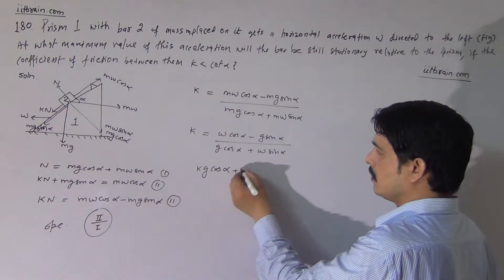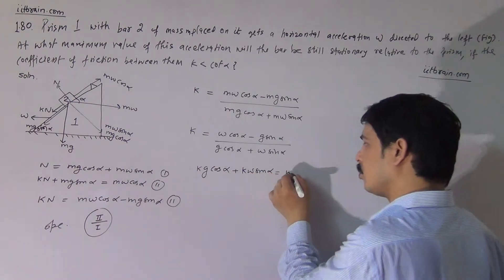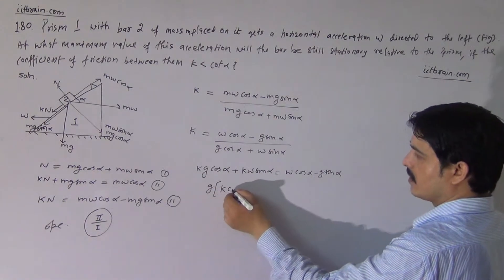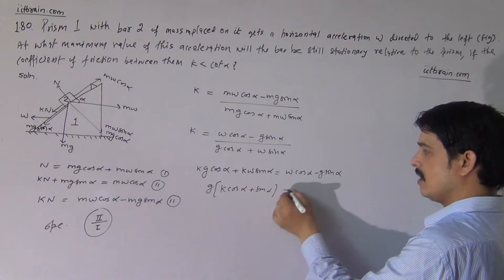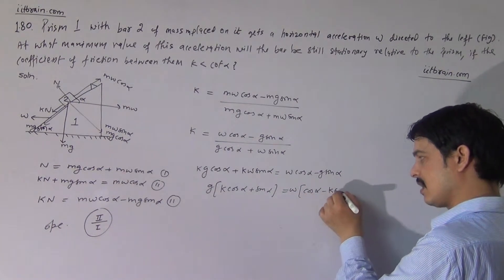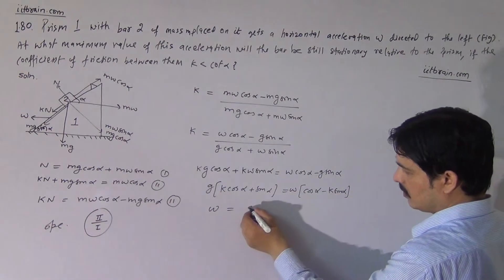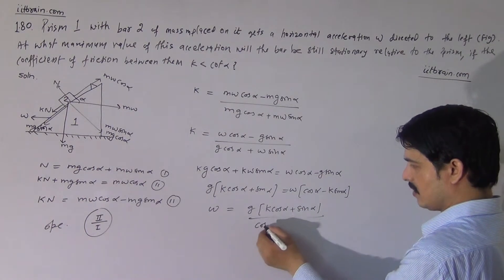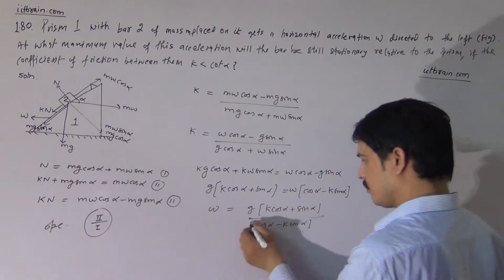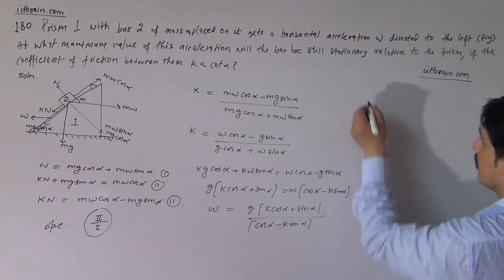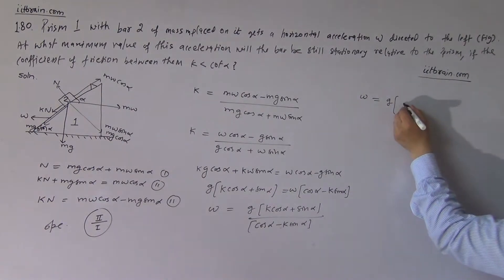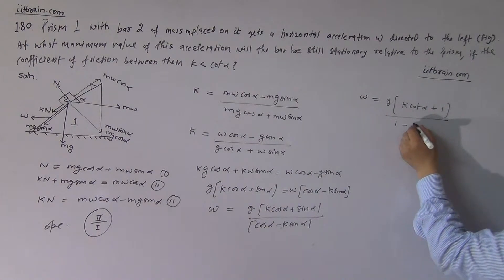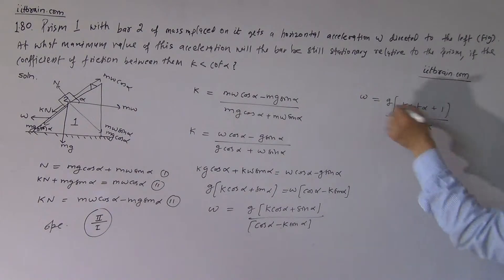Rearranging: K·(G·cos(alpha) + W·sin(alpha)) = W·cos(alpha) − G·sin(alpha), so K·G·cos(alpha) + K·W·sin(alpha) = W·cos(alpha) − G·sin(alpha). Taking G common gives K·cos(alpha) + sin(alpha), and taking W common gives cos(alpha) − K·sin(alpha). So finally, W = G·(K·cos(alpha) + sin(alpha)) / (cos(alpha) − K·sin(alpha)). Dividing by sin(alpha), this becomes W = G·(K·cot(alpha) + 1) / (cot(alpha) − K).